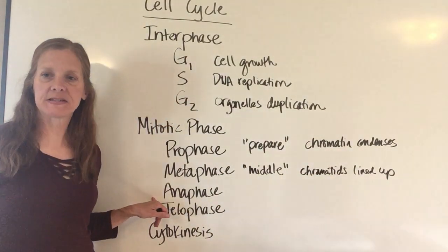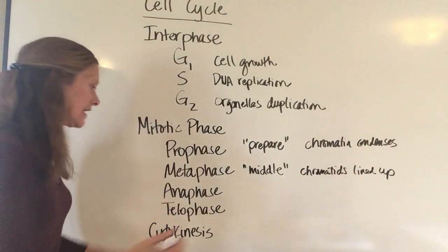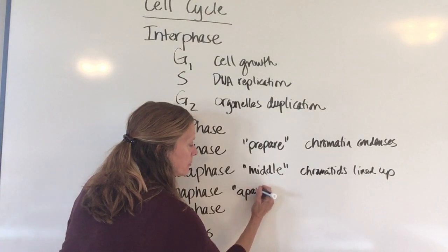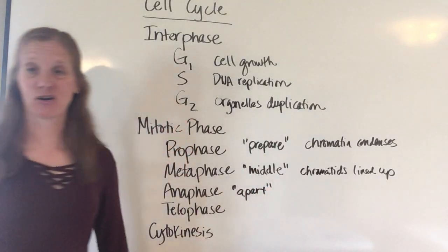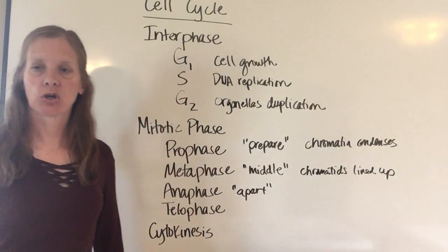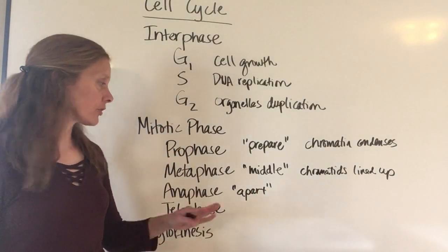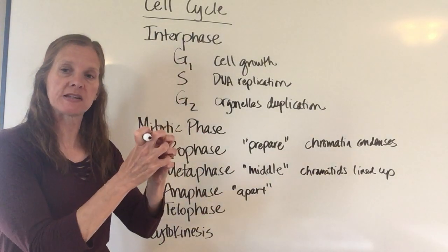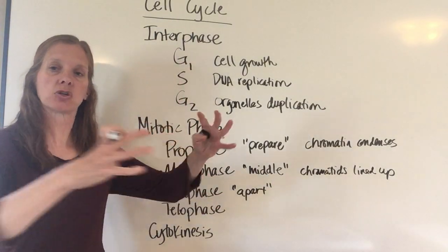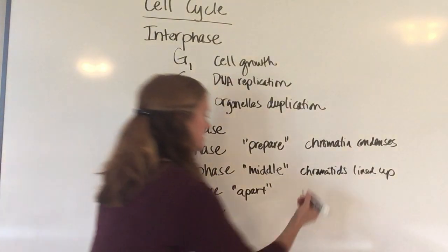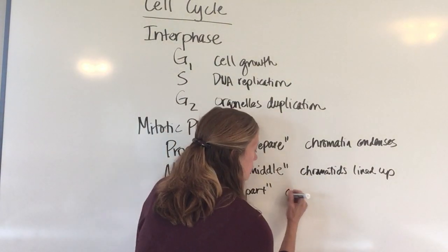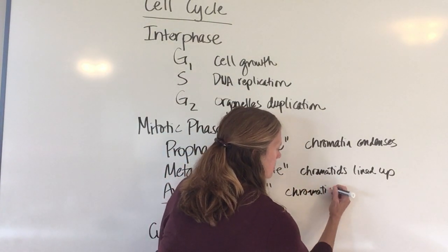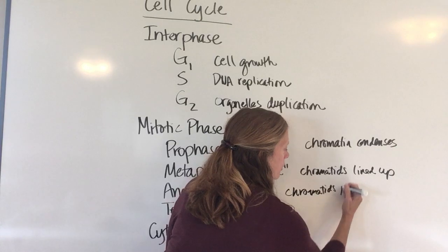In anaphase, the A stands for apart. The chromatids — remember there were two chromatids joined by a centromere — are actually going to pull away and separate from each other. So the chromatids pull apart and start to move away from each other.